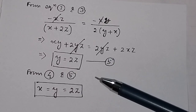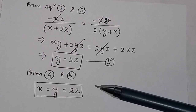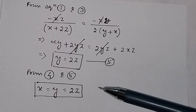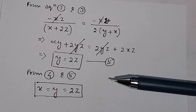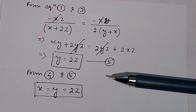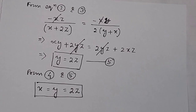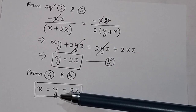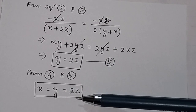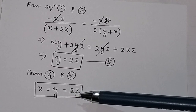So for a rectangular box of maximum capacity whose surface area is given and which is open at the top, the length is equal to the breadth is equal to 2 into the height. That is, if length is x, breadth is y, and height is z, then x equals y equals 2z.